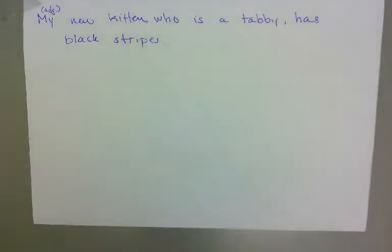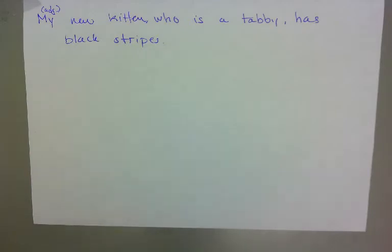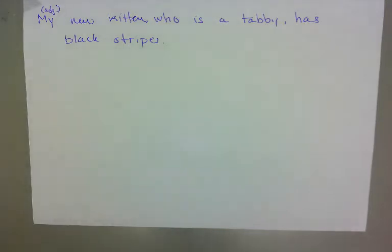Greetings all. I'd like to take a look at how to diagram adjectival, adverbial, and noun clauses, and how to differentiate between the three in order to determine what type of skeleton is needed.